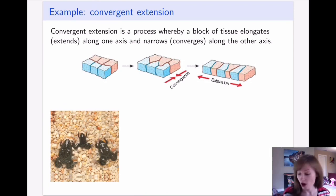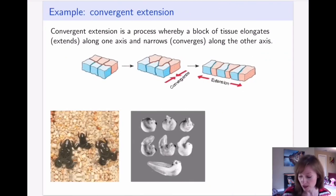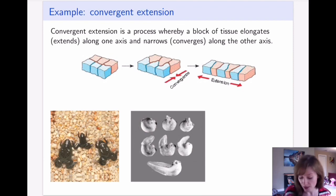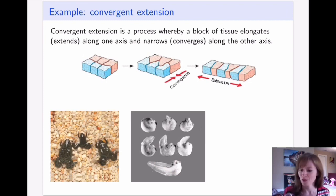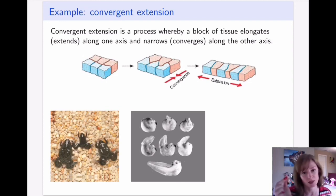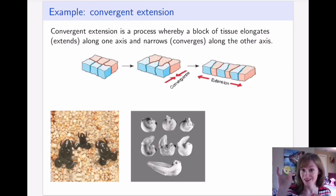A frog starts as an egg, which is pretty spherical in shape. Then through the process of rearranging where the cells are, it becomes what we know as a tadpole. My daughter has these handouts from her daycare: it starts as a little egg inside a transparent shell, which is why we can study it fairly well. It then becomes a tadpole with little eyes, and finally becomes a little frog.